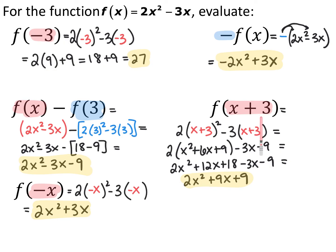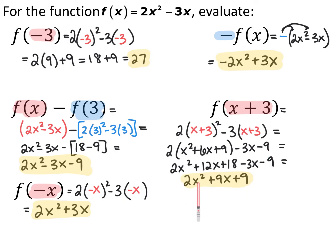For f of x plus 3, I replaced every x in the original function with x plus 3 and then simplified. x plus 3 quantity squared is x squared plus 6x plus 9. Multiplying by 2 gives 2x squared plus 12x plus 18. Distributing negative 3 into x plus 3 gives negative 3x minus 9. Combining everything, I end up with 2x squared plus 9x plus 9.